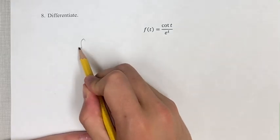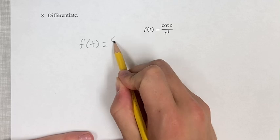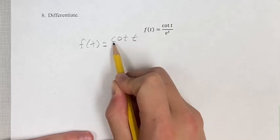In this problem, we're differentiating the function f of t is equal to the cotangent of t over e to the t.